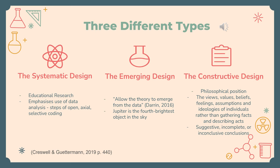The emerging design is a reaction to systematic design in many ways. It allows the theory to emerge from the data rather than forcing the data into preconceived categories. Jupiter being the fourth brightest object in the sky is a famous example of the emerging design by Galileo with his telescope and measurement in 1609.